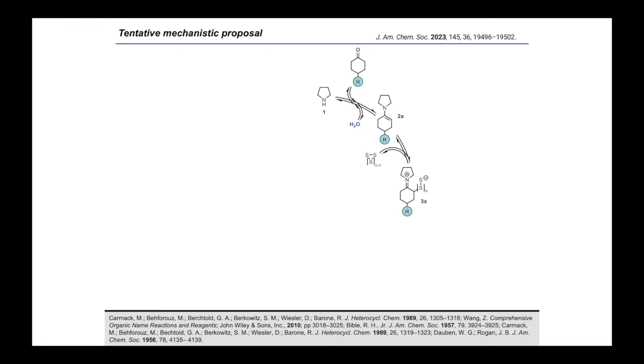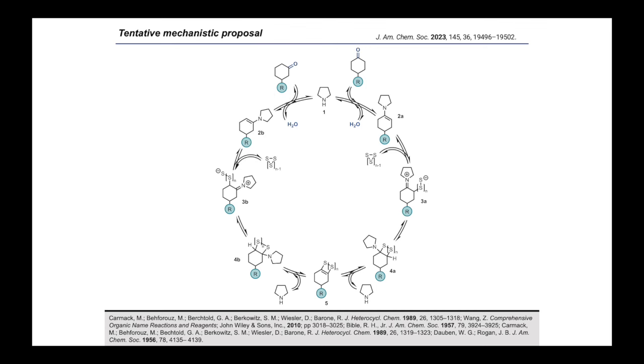It's worth noting that sulfur readily dissolves in basic aqueous or alcoholic solutions forming various polysulfides. However, the precise speciation of sulfur compounds under our specific reaction conditions remains unclear. 3A then undergoes an intramolecular nucleophilic attack on the iminium species, leading to the formation of intermediate 4A, from which pyrrolidine can potentially be eliminated. Following elimination, the proposed intermediate 5 is symmetric, allowing pyrrolidine to attack from either side. Importantly, assuming that all elementary steps in this mechanistic proposal are reversible, we propose that the reaction can proceed in a retrograde manner until the ketone is regenerated.